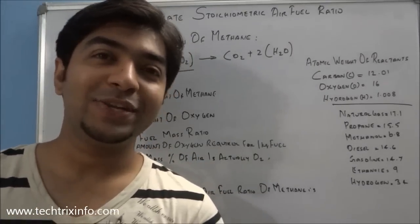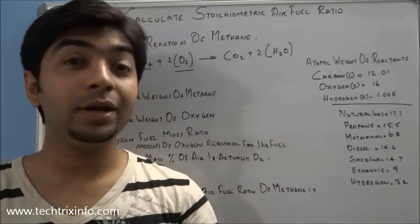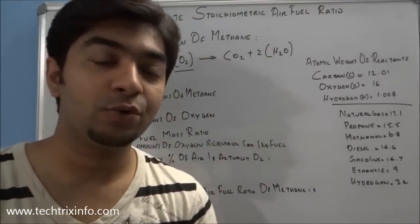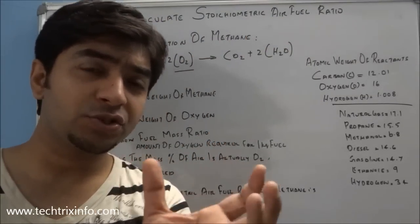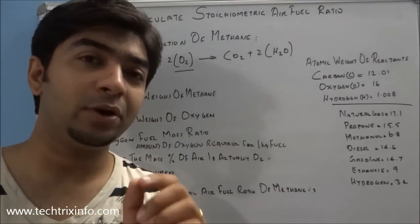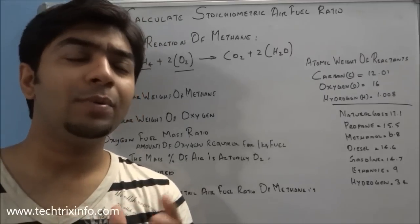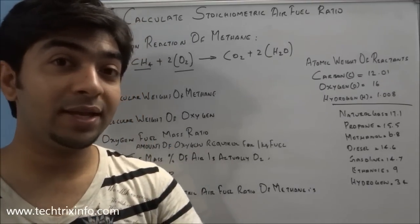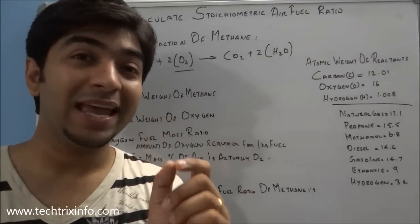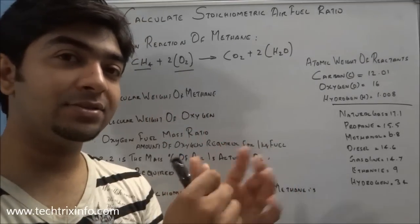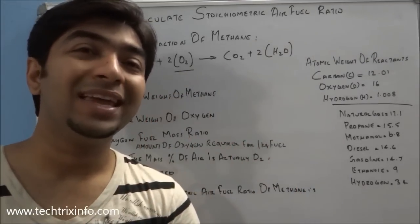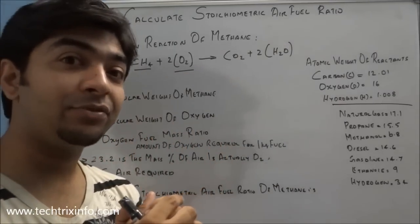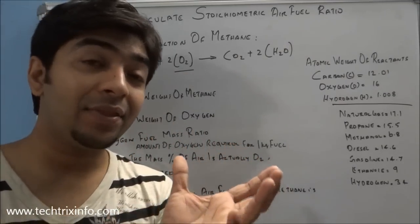Hi, welcome back to Tech Tricks Info. Today we will be learning about how to calculate the stoichiometric air-fuel ratio of a fuel. The stoichiometric air-fuel ratio — you might know it for normal IC engines which use gasoline — is 14.7:1, that is 14.7 kg of air is required to burn 1 kg of fuel.